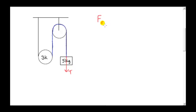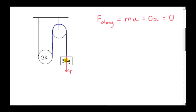We look at the resultant force along this section of string, the section highlighted in blue. We know that that's the mass of the string times the acceleration of the string. But the mass of the string is zero, so the resultant force along this piece of string is zero. There is a force on the string due to the pulley, but the pulley exerts a force perpendicular to the string, so it has no component along the string. We also have the weight of the string, but that's zero since we're assuming the mass is zero.